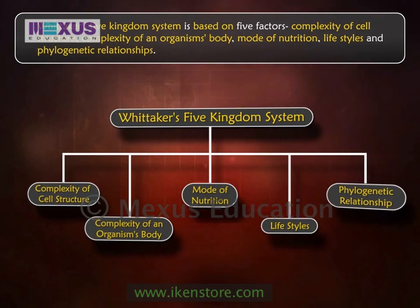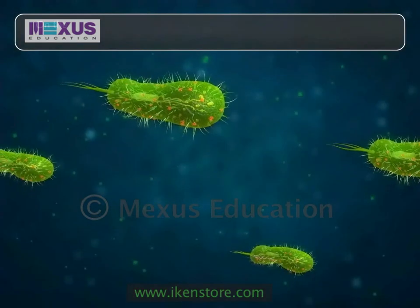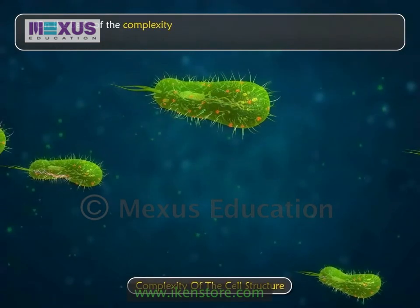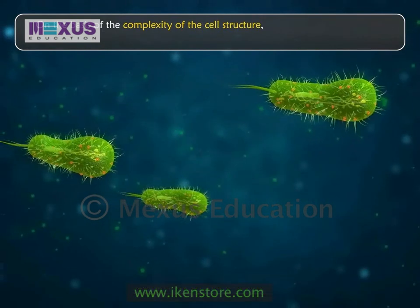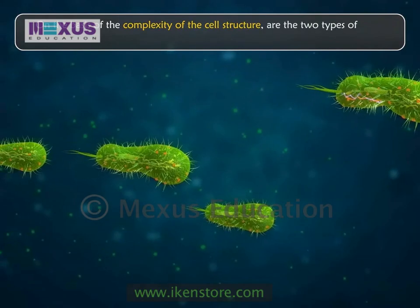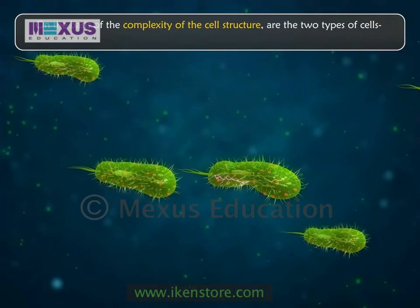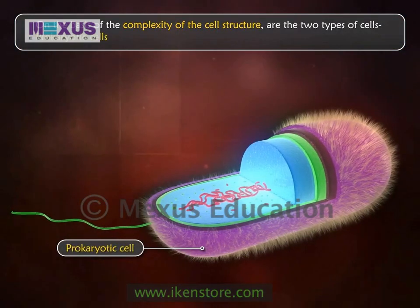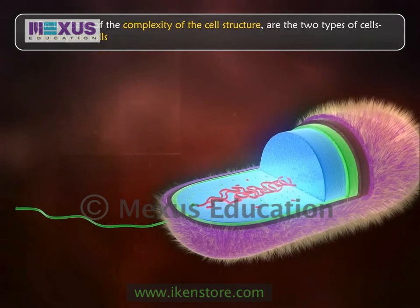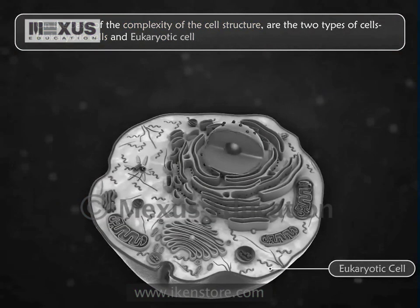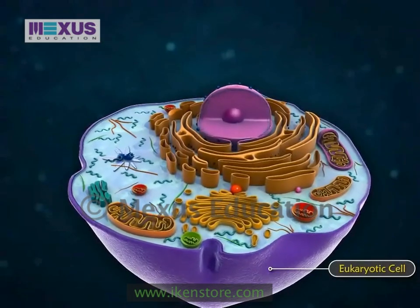Let's understand these five factors one by one. The first factor is the complexity of cell structure. On the basis of the nucleus and other characteristics, two types of cells are recognized. The first type is a simple primitive cell known as a prokaryotic cell, as in the case of bacteria and algae. The second type is a eukaryotic cell, which has a complex structure and is found in fungi, plants, and animalia.